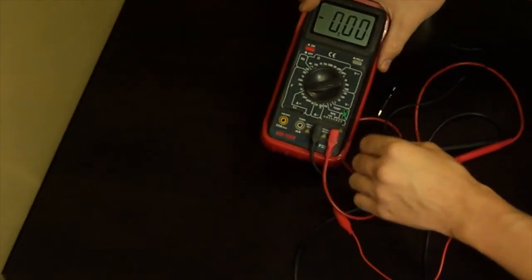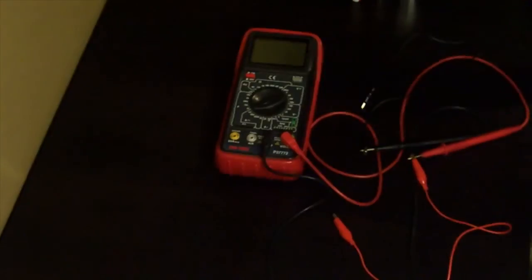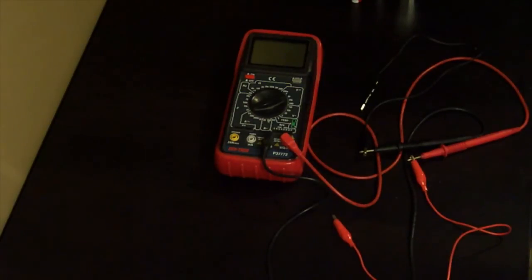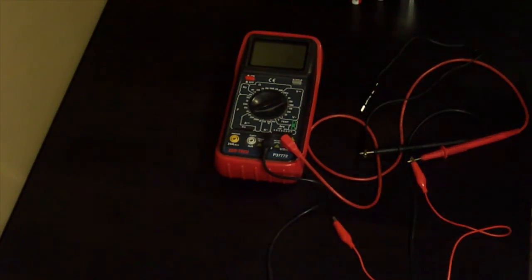So yeah, that's the Centech P37772 digital multimeter. Pick it up at Harbor Freight and you won't be disappointed. Subscribe, like, comment, check out my site falterhowto.com for basic how-tos and product reviews. Thanks for watching.